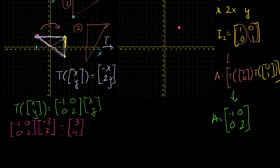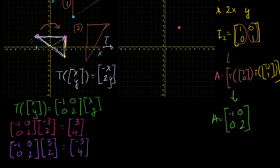Now let's look at the point (3, 2). We take [[-1, 0], [0, 2]] times (3, 2): minus 1 times 3 is minus 3, plus 0 times 2, so minus 3; and 0 times 3 is 0, plus 2 times 2 is 4. So this point, by our transformation T, becomes (minus 3, 4). You could say it's mapped to (minus 3, 4) in R2.